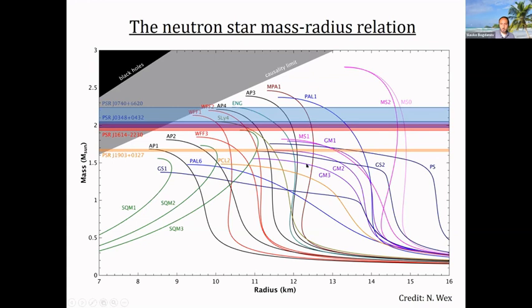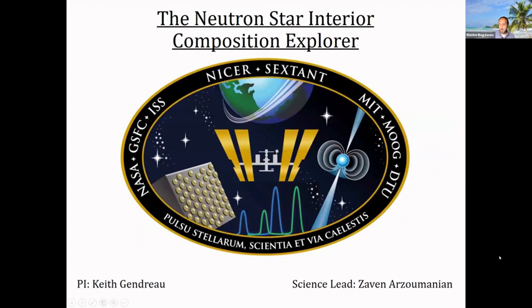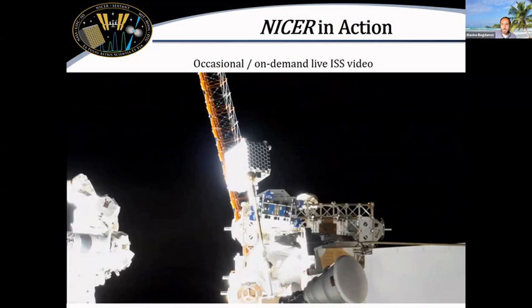Yesterday we talked about gravitational wave approaches to constraining the neutron star equation of state through double neutron star mergers. Here I'm going to talk about one possible technique using electromagnetic observations — specifically X-ray observations with the Neutron Star Interior Composition Explorer (NICER), which is a NASA Explorer mission that has been operating on the space station since 2017.